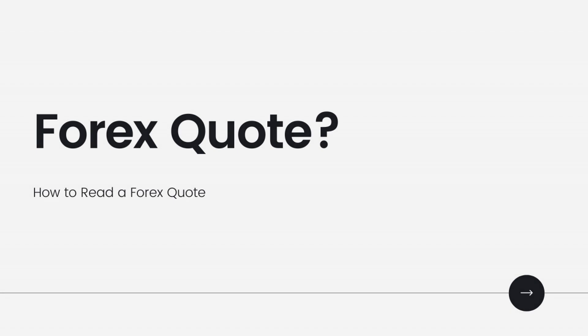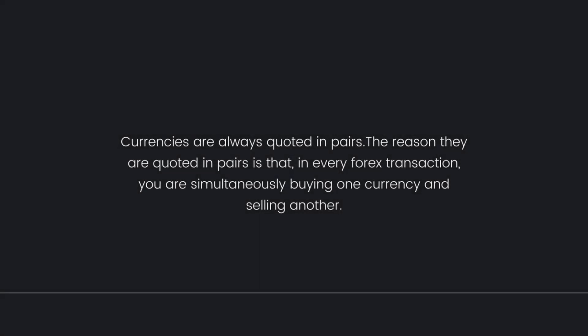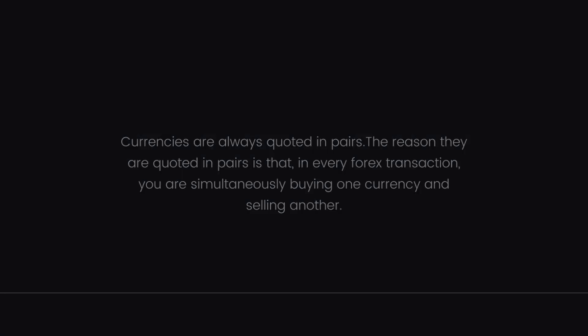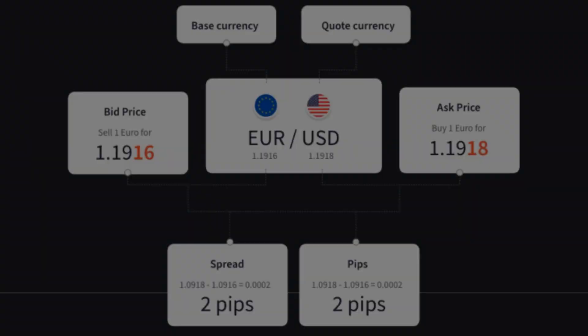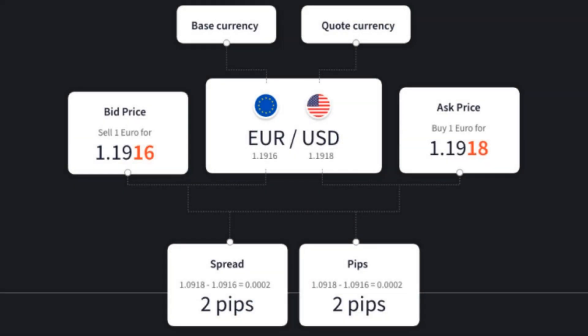Next, we are going to take a closer look at how to read a Forex quote. Currencies are always quoted in pairs. The reason they are quoted in pairs is that in every Forex transaction, you are simultaneously buying one currency and selling another. If you buy EURUSD, like in the example, the base currency is the first listed currency on the left of the slash. The base currency is the reference element for the exchange of the currency pair and always has a value of one.